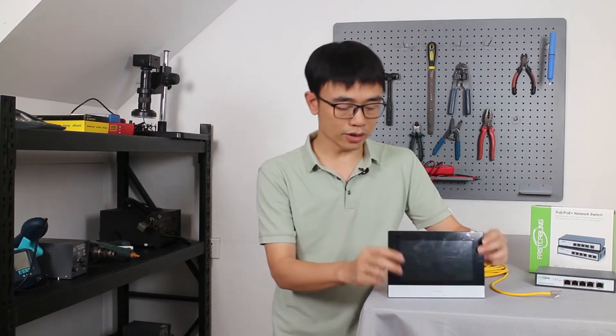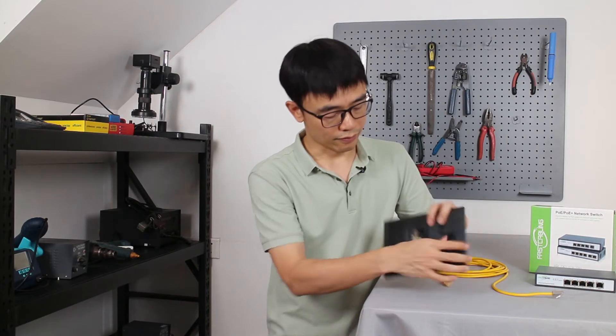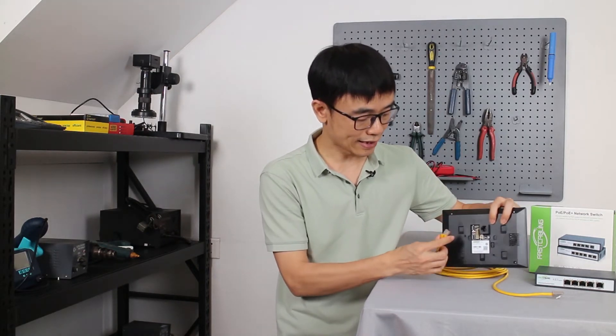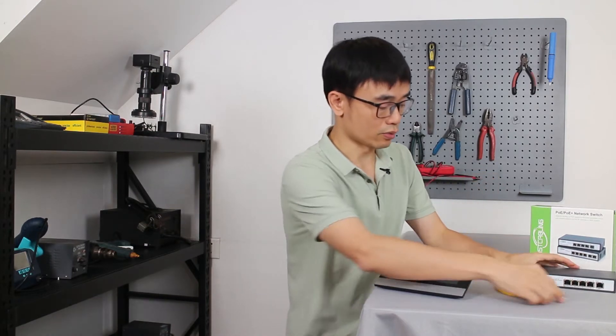The IP intercom uses the TCP IP technology. This is the monitor from the IP intercom. From the back, we can see the RJ45 network port which allows us to use the internet cable to connect this monitor to the switch.